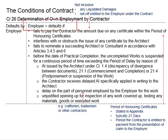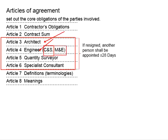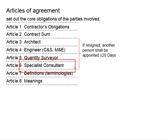Next, the employer fails to nominate a substitute architect or consultant in accordance with Articles 3, 4, 5, and 6. Articles 3, 4, 5, and 6 are related to the architect, civil and structural engineer, mechanical and electrical engineer, quantity surveyor, or specialist consultant. For any project, these professionals are a must.